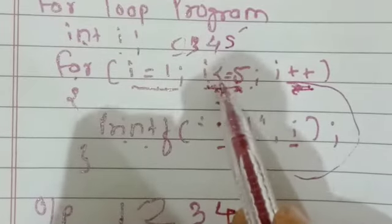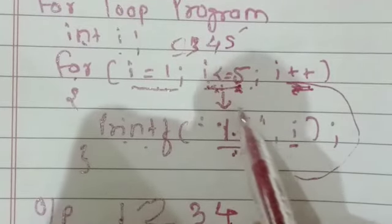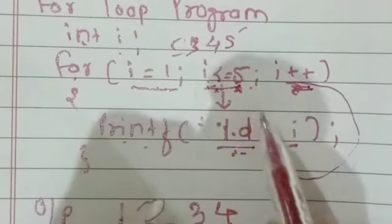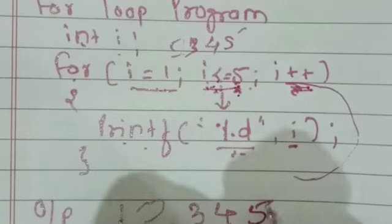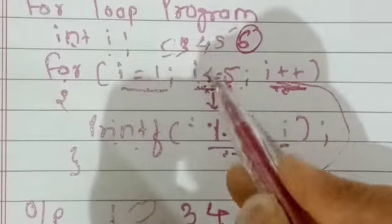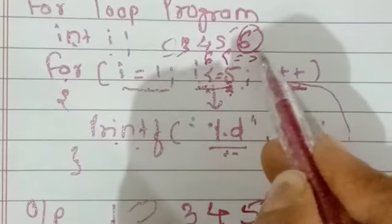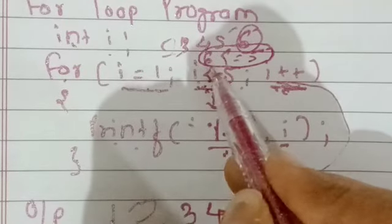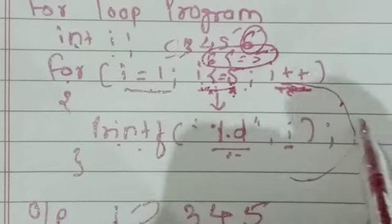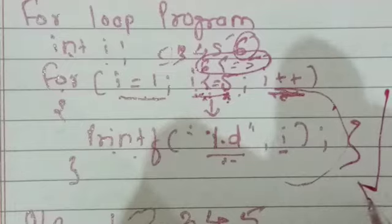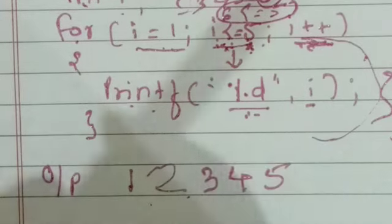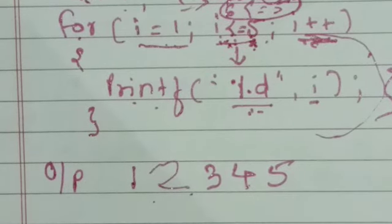i++ again, i becomes 5. 5 less than or equals to 5 — the condition is true, it is equal to 5, so the value 5 is printed. Next, i++ makes i become 6. 6 less than or equals to 5 — both conditions are false. The statement is not executed, control comes out of the loop, and the program ends. So the output is: 1, 2, 3, 4, 5.